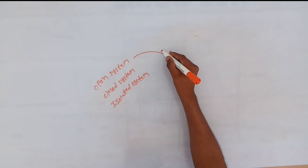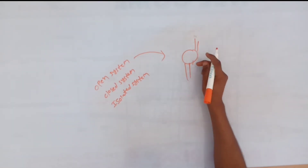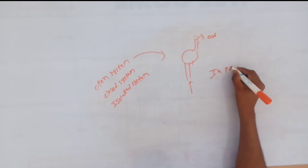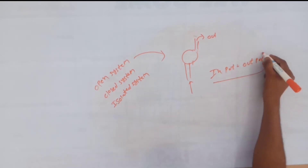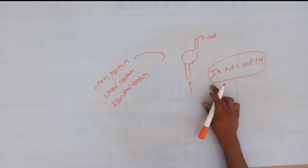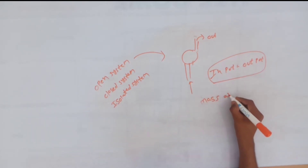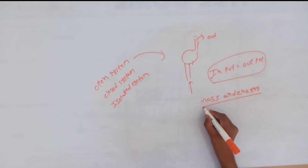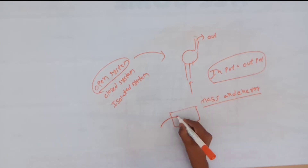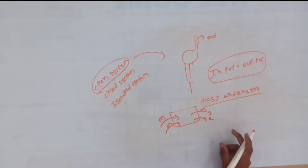First one is open system. For example, a pump. In an open system, you can have input and output. Input goes in and output comes out — for example, water is the input and water is the output. That's how we get mass and energy. These two — mass and energy — are transferable. It's an open system, where both inlet and outlet have mass and energy.